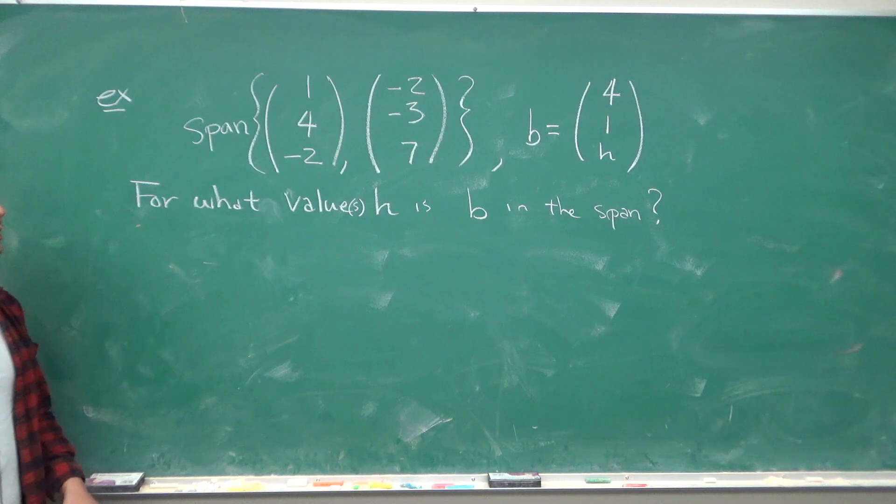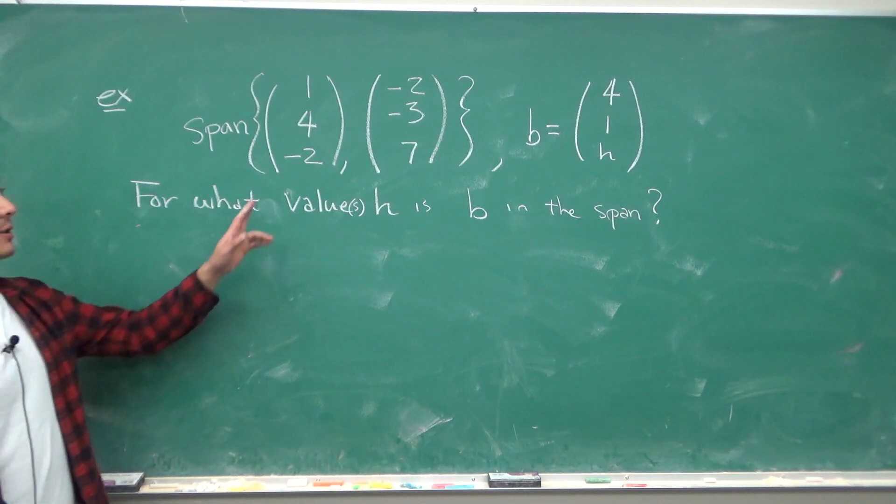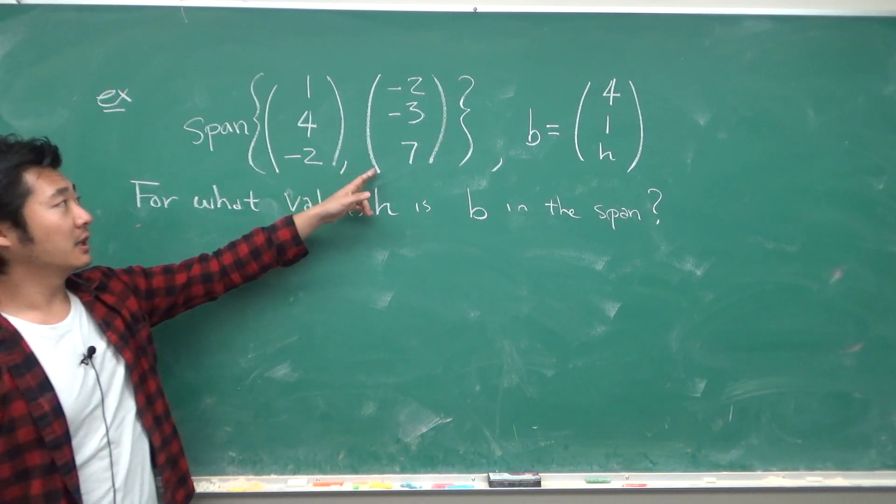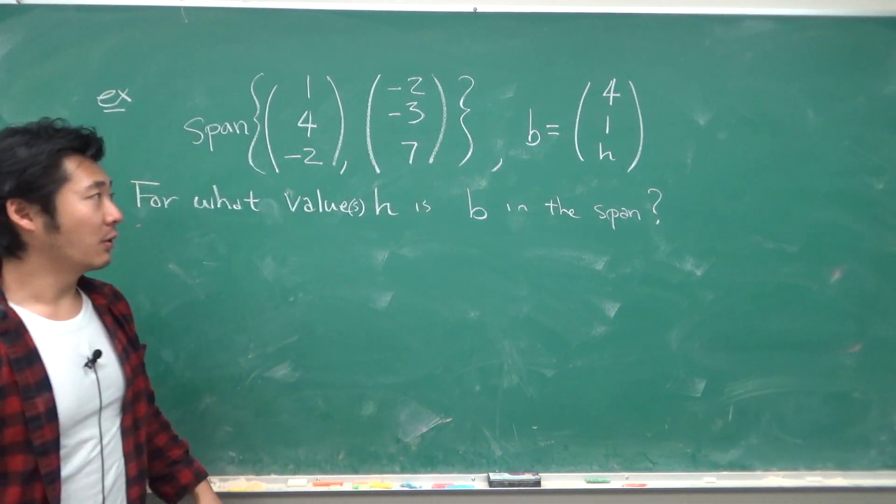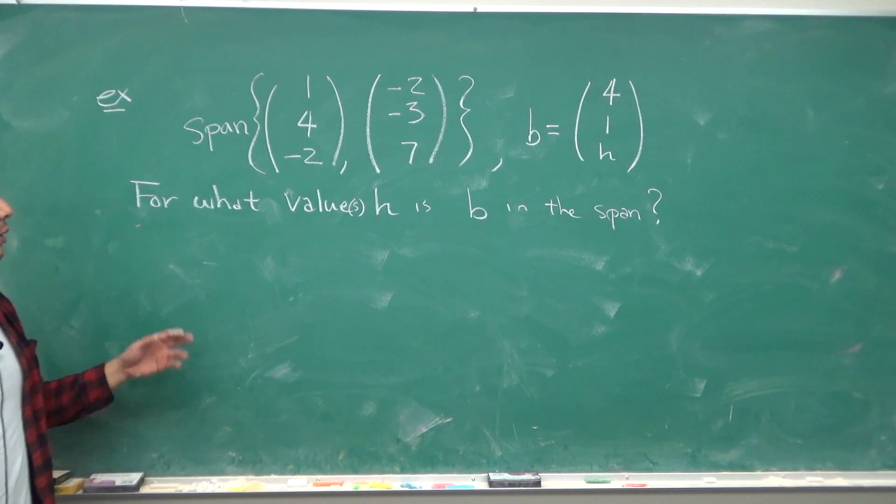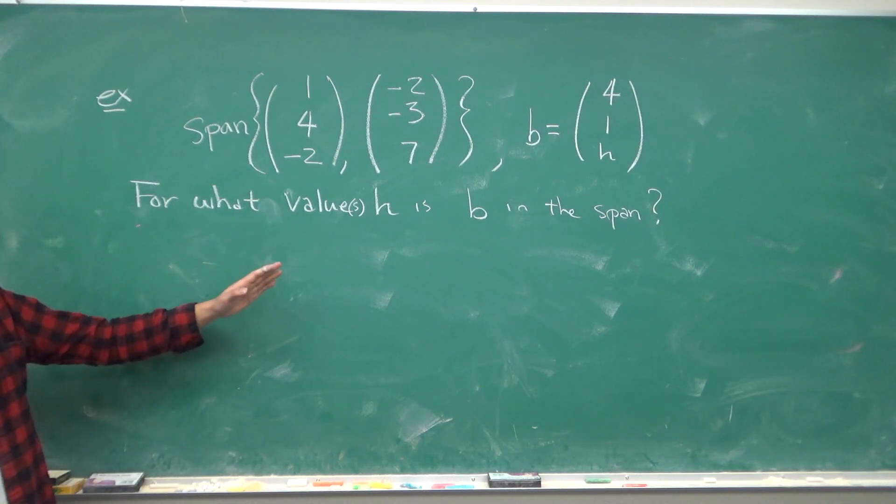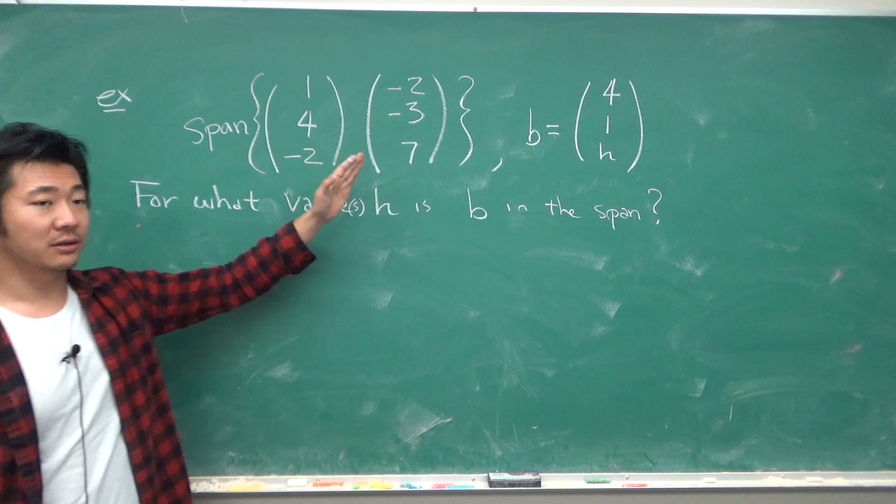Let's do another example. Given these two vectors 1, 4, negative 2, and negative 2, negative 3, 7, and this vector b is 4, 1, h. For what values h is b in the span of these two vectors?